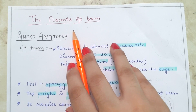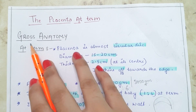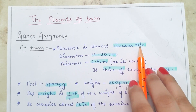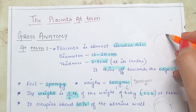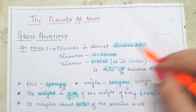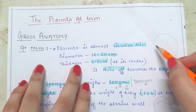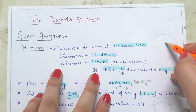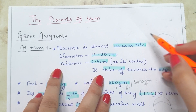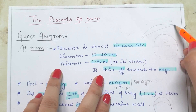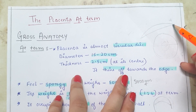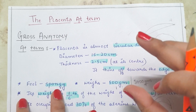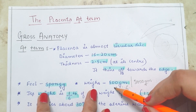The layer of syncytiotrophoblast cells is present, and above it is the cytotrophoblast layer known as the outer cytotrophoblast shell; the area above that is known as the trophosphere. At term, the placenta is an almost circular disc with a diameter of 15 to 20 centimeters. Its thickness is 2.5 centimeters at the center, thinning towards the edges. The feel of the placenta at term is spongy.